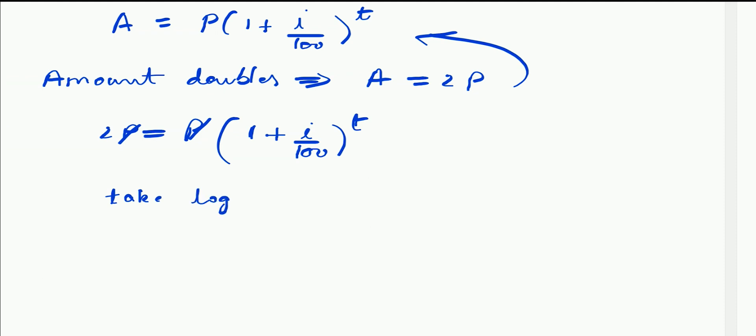Now take natural log of both sides. Equation becomes Ln2 equals t times Ln1 plus i by 100. The t and the power comes down using this basic log formula.